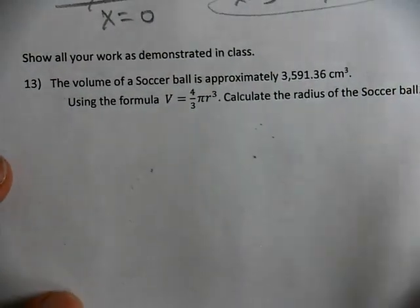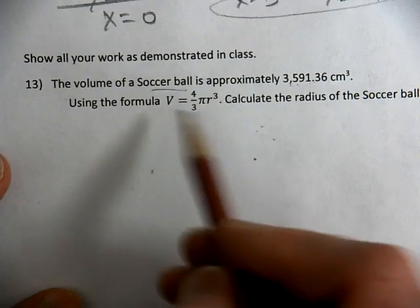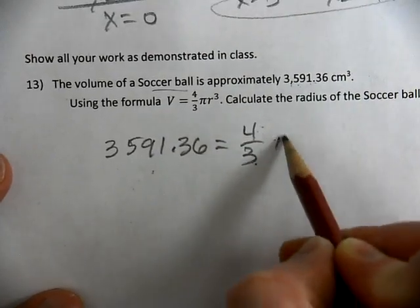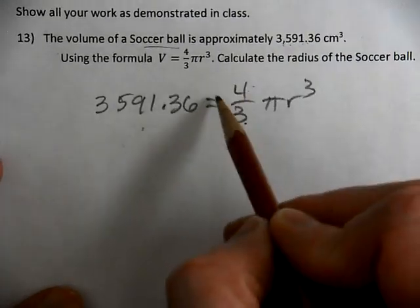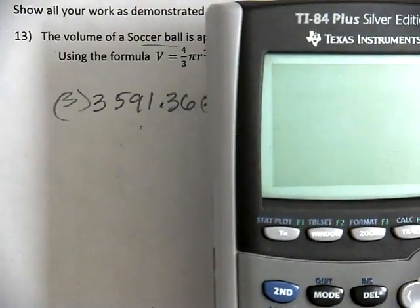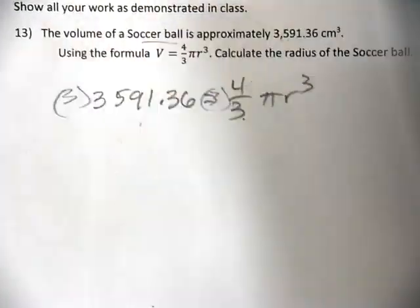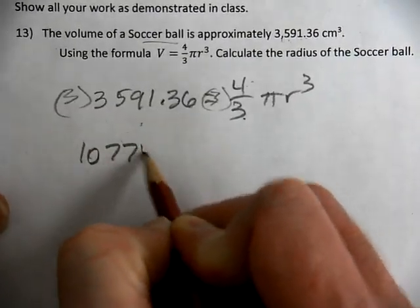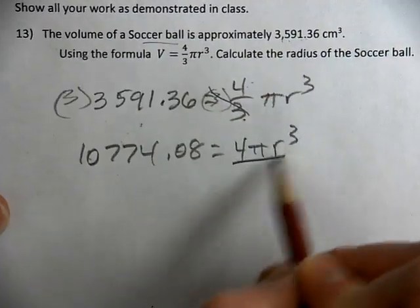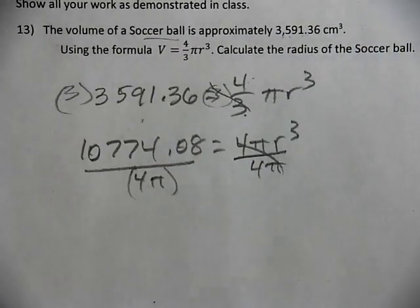Last question. Working with a soccer ball, we have the volume of our soccer ball, 3591.36 equals 4 thirds pi r cubed. The formula you learned in geometry. Multiply by 3. Definitely need a calculator for this one. So 3 times 3591.36 gives us 10,774.08. That leaves us with 4 pi r cubed. We can divide by 4 pi. But when you type that in your calculator, you have to have parentheses around that.